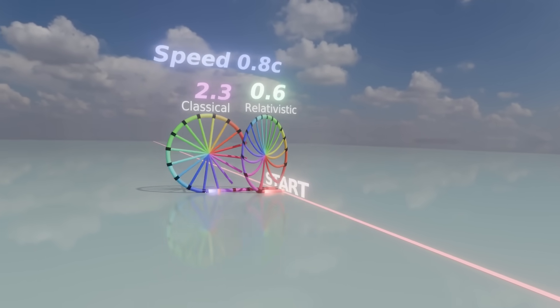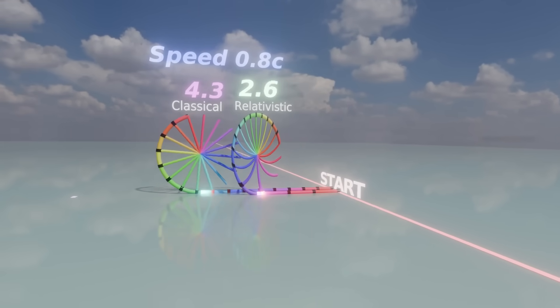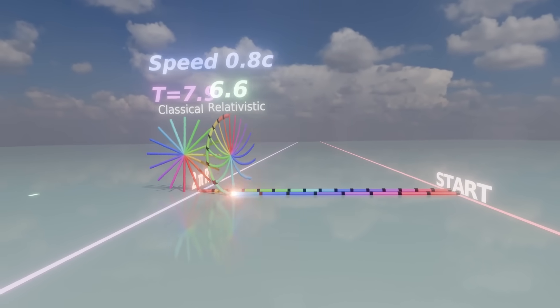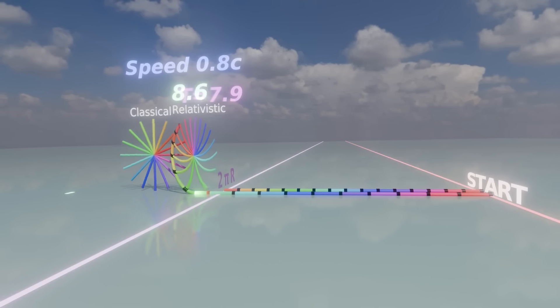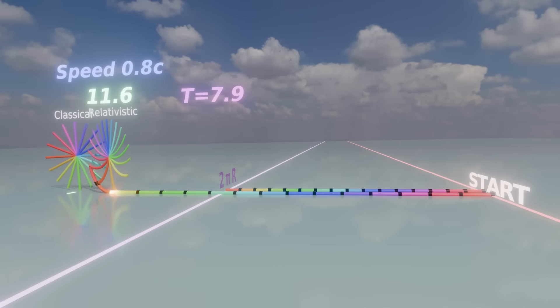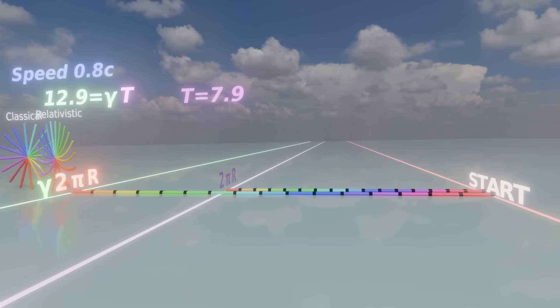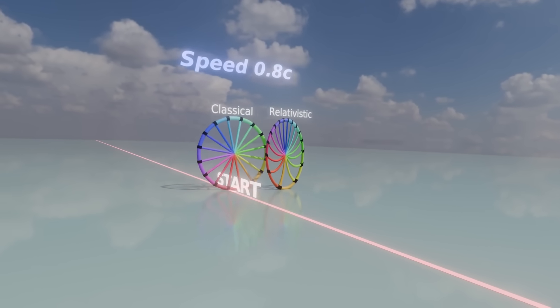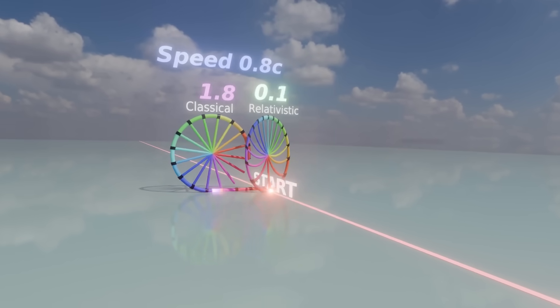One way to explain this is through time dilation. The time runs slower for the rolling wheel, so it takes longer for it to complete one full rotation. But it will be moving with the same velocity all the time, so it has more time to travel. Thus, it will travel a longer distance during one period.